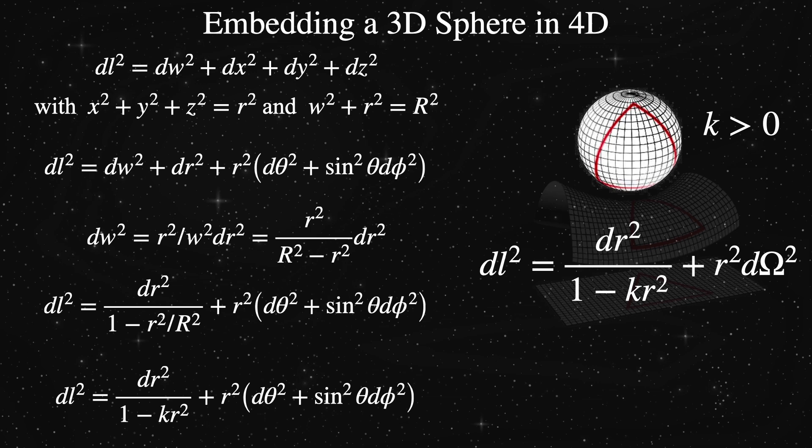This leaves us with dw be converted into little r scaled by the restriction constant big R. Plugging this dr back into the 4-D spatial metric and sampling with a tiny bit of algebra gives us a new form of the metric.